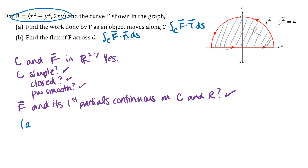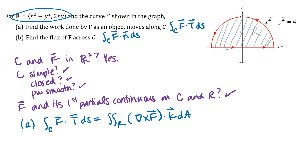For part A, since we're asked to find work — another name for work is circulation — we use the circulation-curl form of Green's Theorem. Our curve has counterclockwise orientation. If the orientation were not counterclockwise, Green's Theorem still applies but you'd need an opposite sign on your work integral. Since this curve does have counterclockwise orientation, we don't need a plus or minus out front.